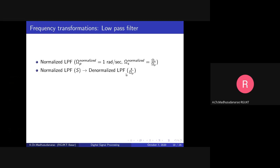Once you have the H(S) expression after designing the filter with the given specifications — Delta P, Delta S, Omega P, and Omega S — Omega S normalized equals Omega S by Omega P. First we design the Butterworth or Chebyshev low pass filter with the normalized specifications: Omega P normalized, Delta P, Omega S normalized, Delta S. After that, we simply apply the transformation: replace capital S with small s divided by Omega P. When you do this transformation, the passband becomes Omega P radians per second and the stopband becomes Omega S radians per second.